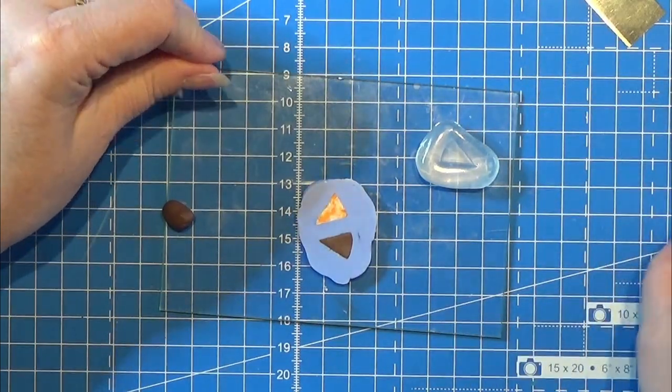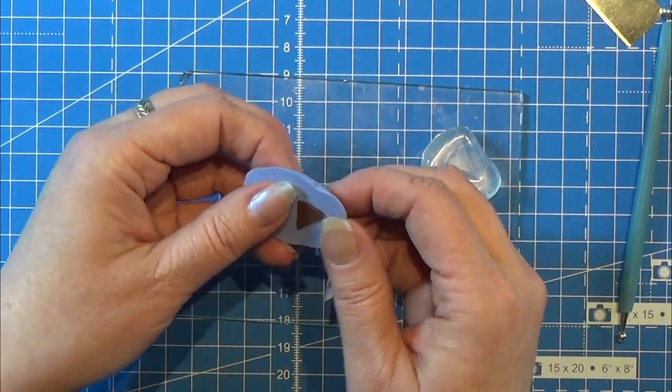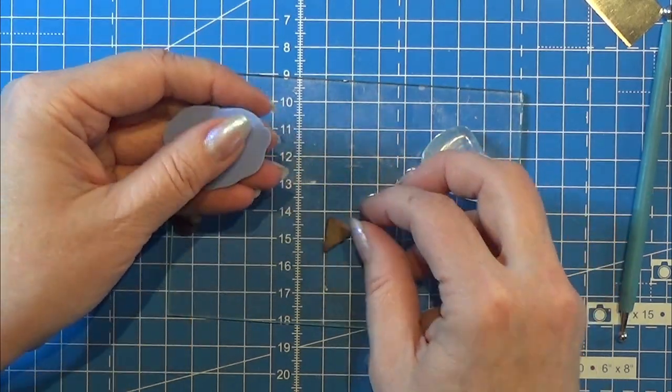And then I am just carefully lifting the two pieces of the mold up out of the mold. Just carefully. Like this.